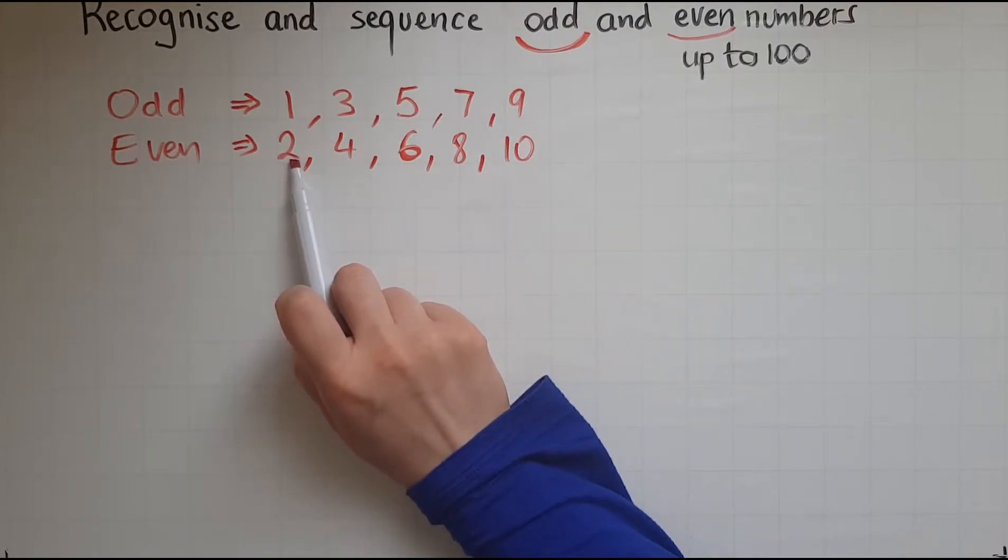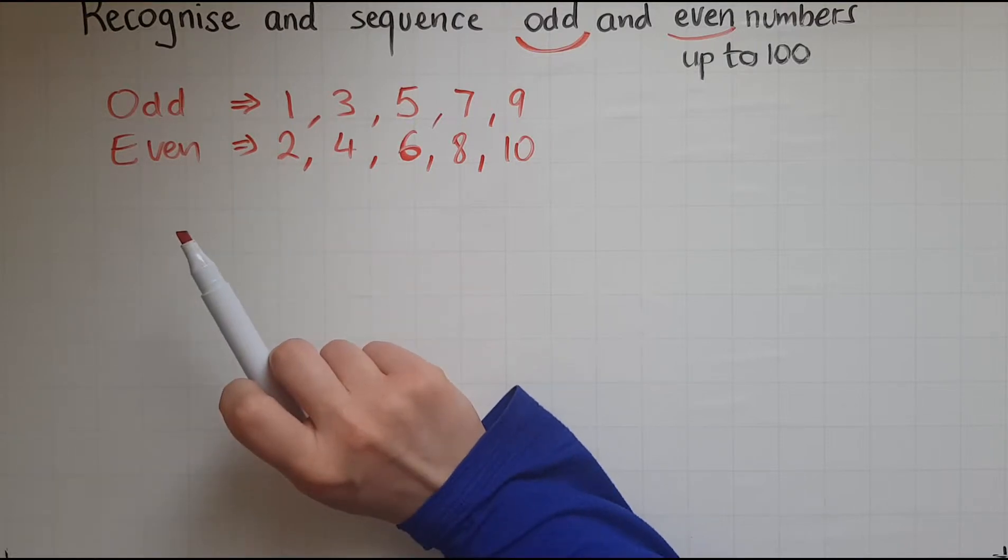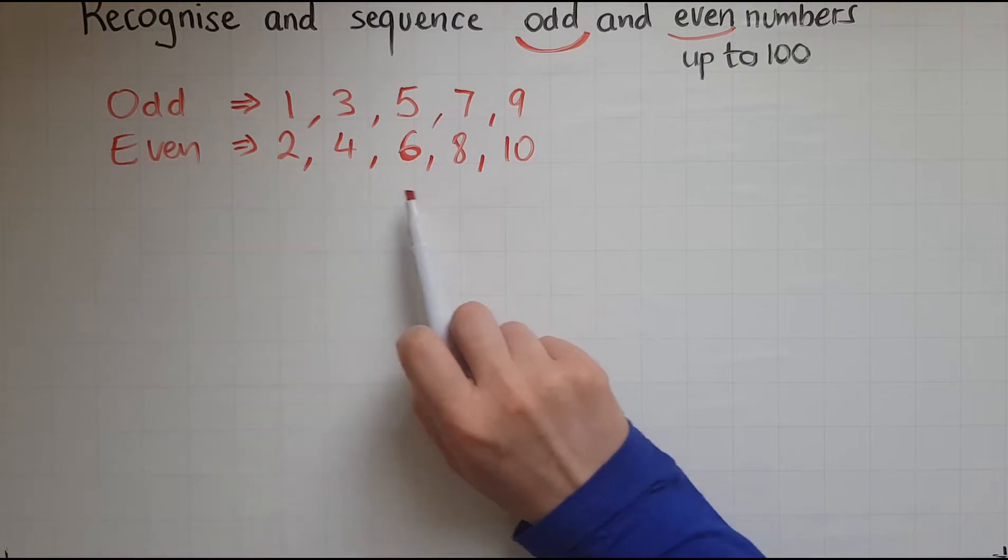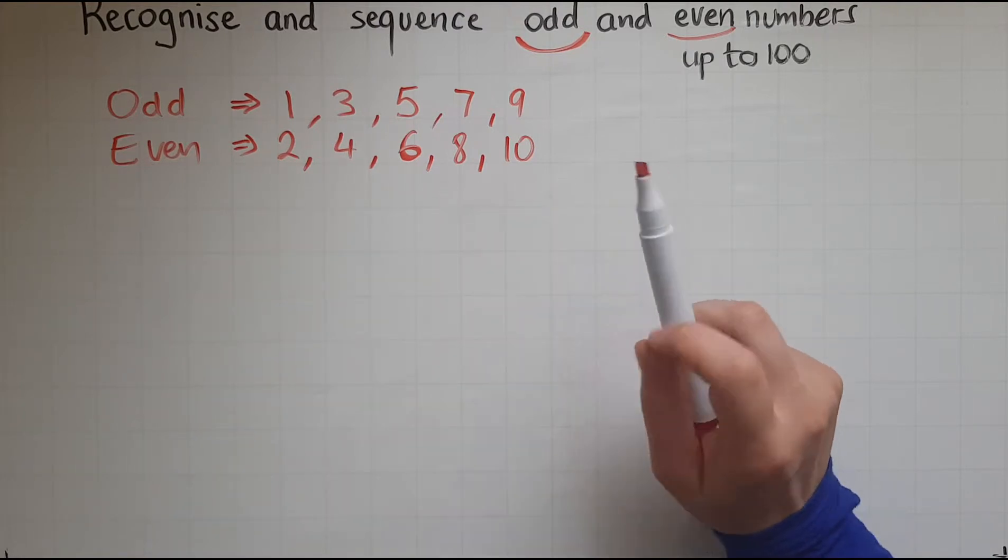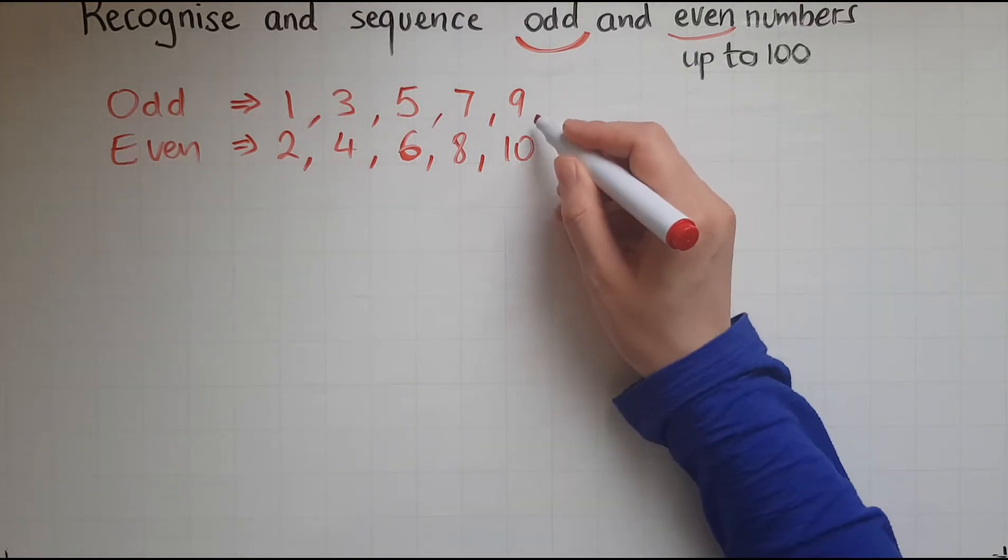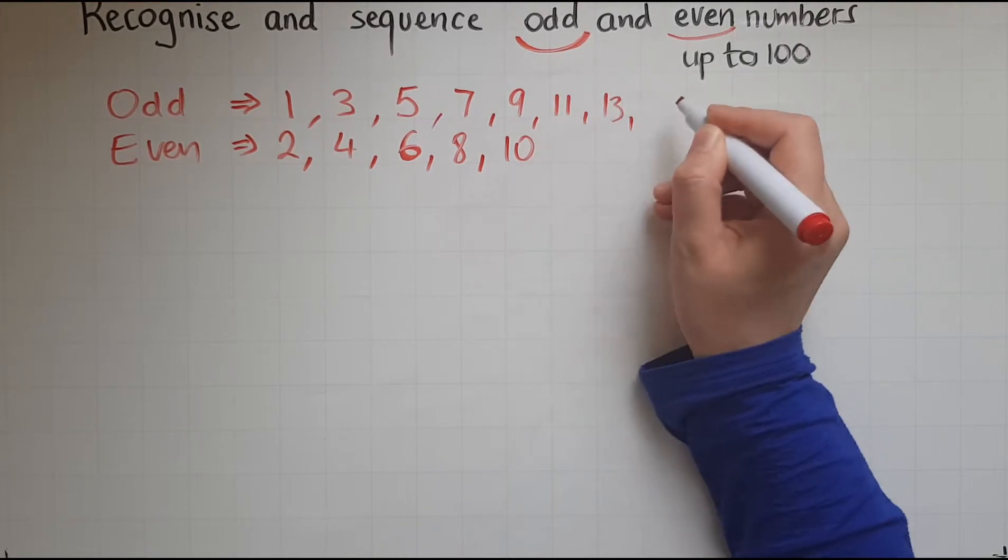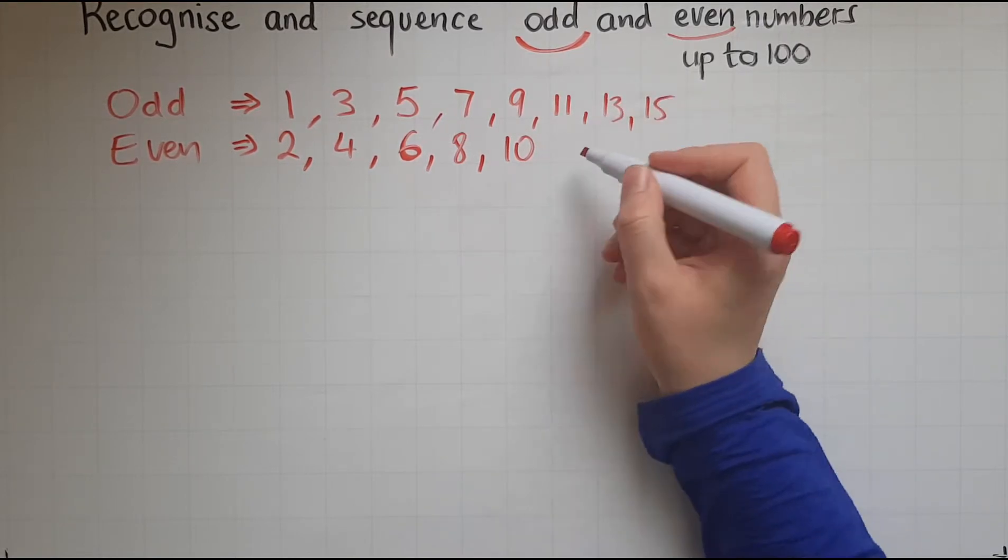But when you have two socks, it means you have an even number. So that, I hope, helps you with the pattern because the same thing continues. So then it would be 11, 13, 15, and so on.